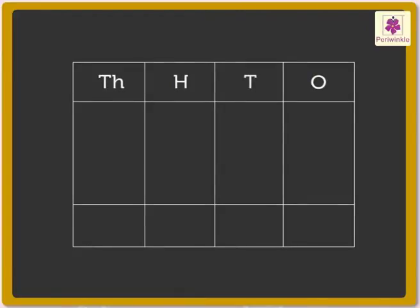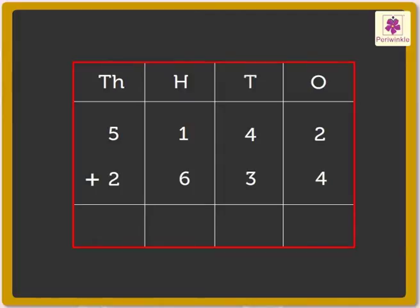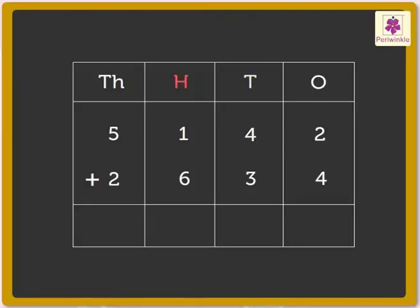Write the numbers 5,142 and 2,634 in the place value chart — that is, in the ones, tens, hundreds and thousands column.